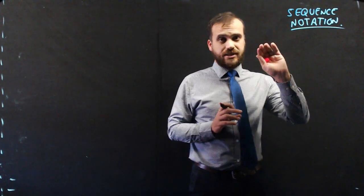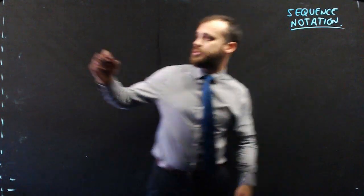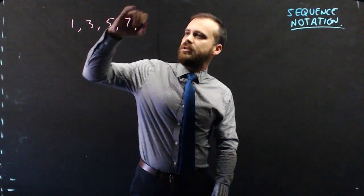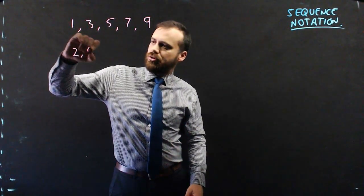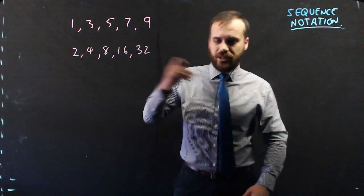So a very quick video here to talk about sequence notation. Now what's a sequence? It's just a sequence of numbers. Something like 1, 3, 5, 7, 9. It could be something like 2, 4, 8, 16, 32, doubling every time.